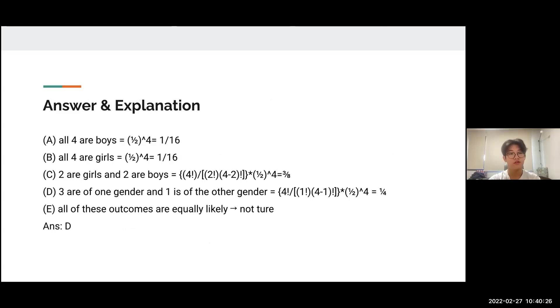For the explanation, choice A, all four boys, has 1/16 probability of occurring. Since the chance of a child being a boy is 1/2 and there are four boys, we calculate (1/2)^4. Choice B uses the same method. Since the probability of a child being a girl is 1/2, we also do the fourth power of it.